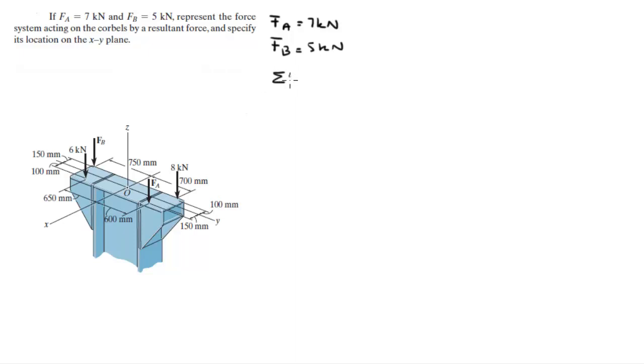The sum of the forces in the z is equal to negative F of A minus F of B minus 6k minus 8k and is a total of negative 26 kN. Now, the resultant force is the magnitude of this addition of forces and it comes out to be 26 kN.